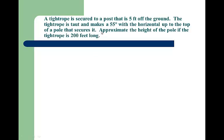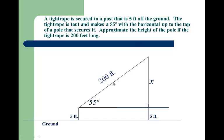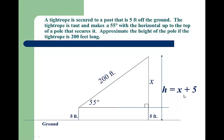Let's get to some real problems here. A tightrope is secured to a post that is five feet off the ground. You're going to ignore that piece for now. The tightrope is taut and makes a 55 degree angle with the horizontal up to the top of the pole that secures it. Approximate the height of the pole if the tightrope is 200 feet long. So here's the diagram. Here's the ground down here. We're secured to this post that's five feet above ground. Here is that tightrope. We want to know its entire height. I drew this line to show you there's a horizontal line here. The height is all the way from the top to the bottom. We can't calculate that right away. We have to ignore this five feet. Our right triangle has a 55 degree angle. The opposite side is X. That's the distance from the five feet in the air up to the top. And the hypotenuse is 200 feet.